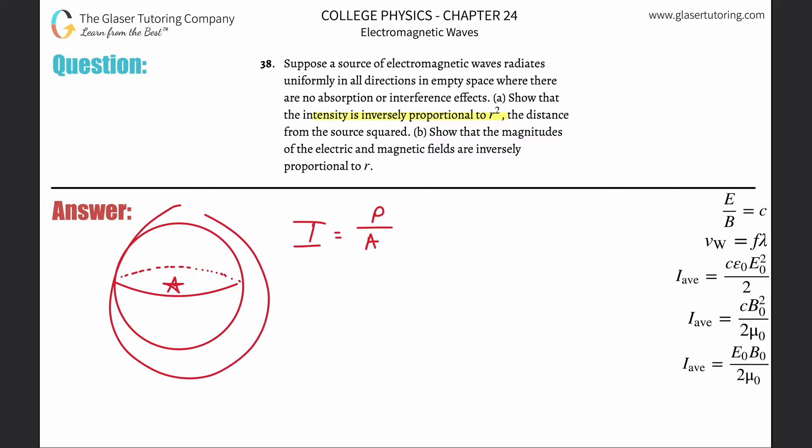Now the area of what? Well, the area of a sphere. So what's the area of a sphere? The area of a sphere is going to be 4πr². So notice, intensity, inversely proportional to r-squared.